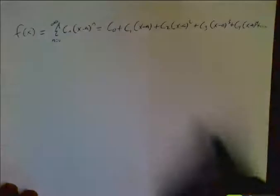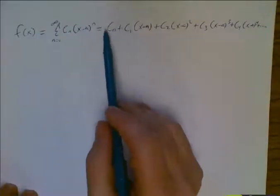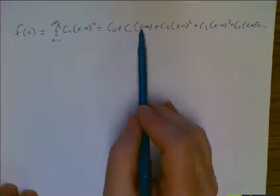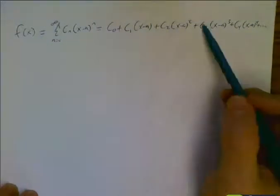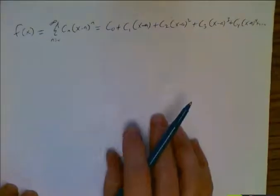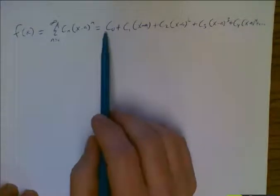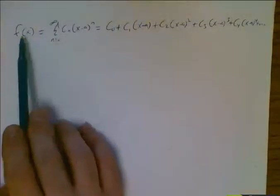Okay? So this is our power series. We have a constant, plus something x to the first, plus something x to the second, plus something x to the third. And that was basically what we did last week, where we have a polynomial that represents our function.